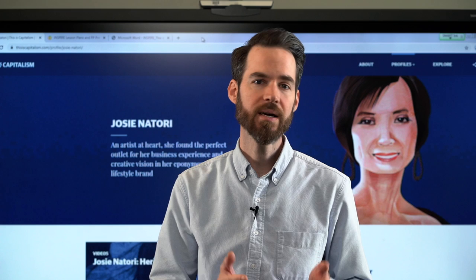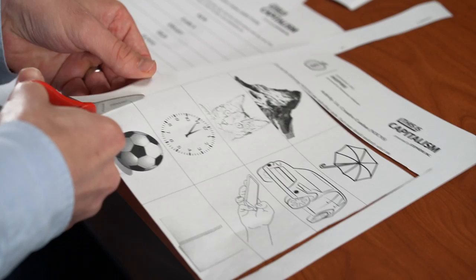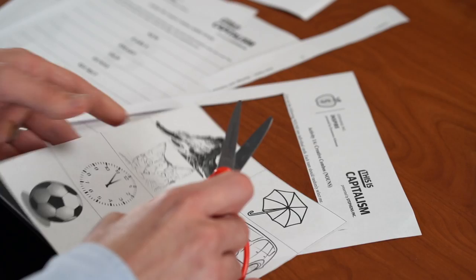Before class begins, print individual copies of Handout 1, Video Questions, and Handout 4, Why. Print team copies of Handout 2 and Handout 3. Per every 8 teams, print and cut out one set of picture cards from activity 1A and the word strips from activity 1B.